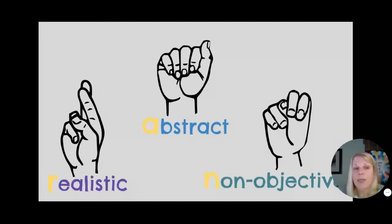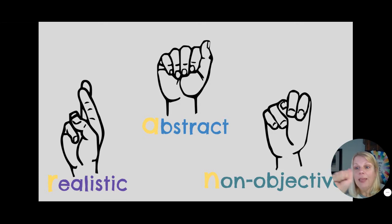When a painting comes up on the screen you will either show me R, which is your fingers crossed facing forward, or A, which is your fist closed with your thumb on the side, or N. N is two fingers down — three fingers down is M, so N is two fingers down.